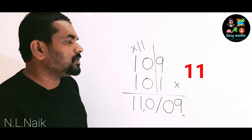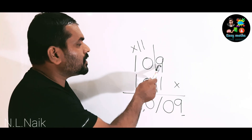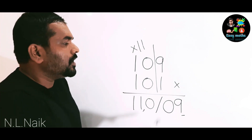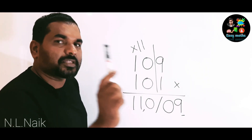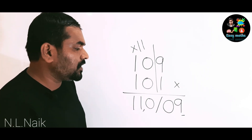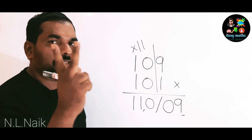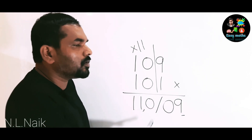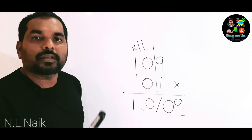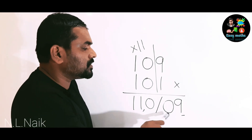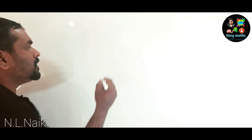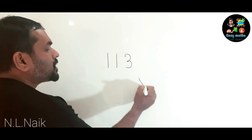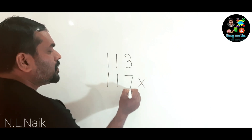This is because the units digits are 9 and 1. It is possible to apply this trick when the units digits sum to 10. For example, 103 into 107: the LHS is 10 × 11 = 110, the RHS is 3 × 7 = 21, so the answer is 11021.